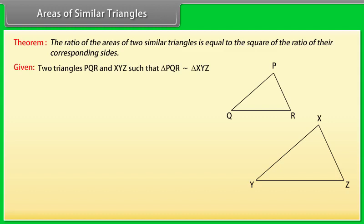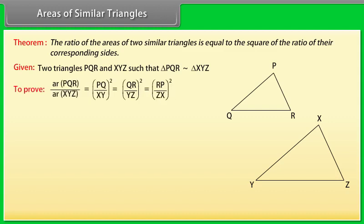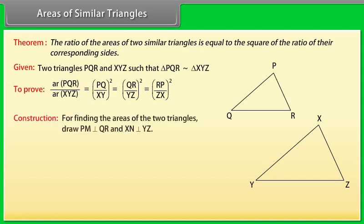To prove: area of triangle PQR upon area of triangle XYZ is equal to (PQ/XY)² = (QR/YZ)² = (RP/ZX)². Construction: for finding the areas of the two triangles, draw PM perpendicular to QR and XN perpendicular to YZ.